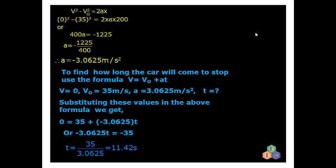To summarize: a car moving at 126 kmph (35 m/s) has its brakes applied by the driver. After traveling 200 meters the car comes to rest — its final velocity becomes zero. Since the brakes cause the car to slow down, it experiences a negative acceleration. We found this retardation to be −3.0625 m/s². We were also asked how long the car travels after the brakes are applied, since the car slows down gradually before stopping.